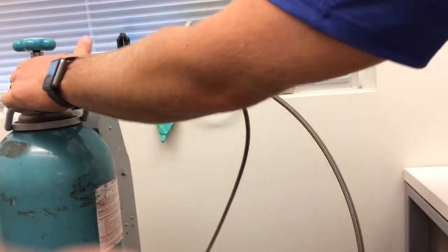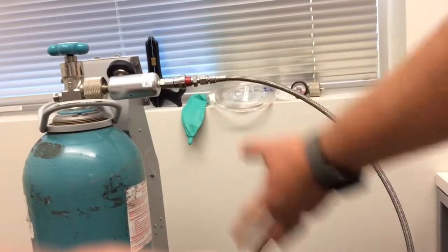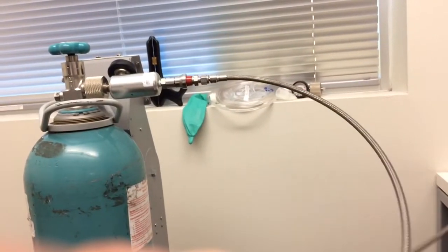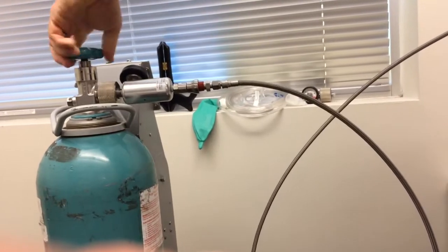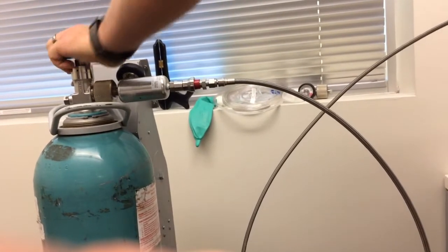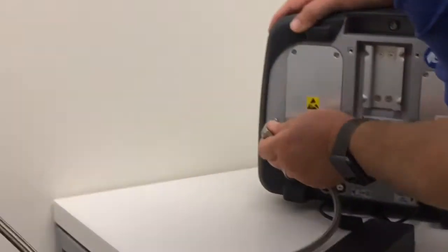This quick connects into the regulator like this. But this regulator hooks to a small cylinder as well as a big cylinder. The proper procedure is to turn the gas on, turn it off, and then we'll hit our purge just like that.